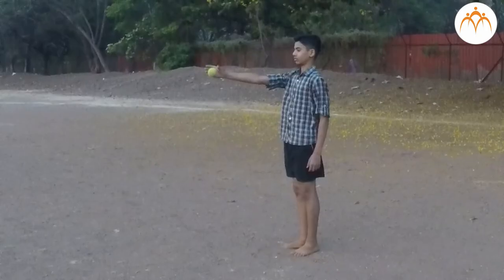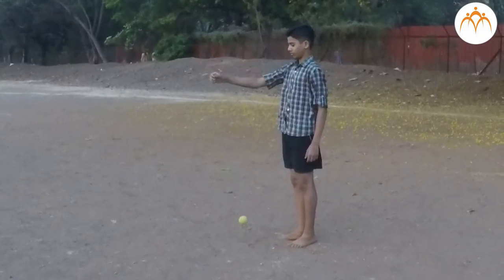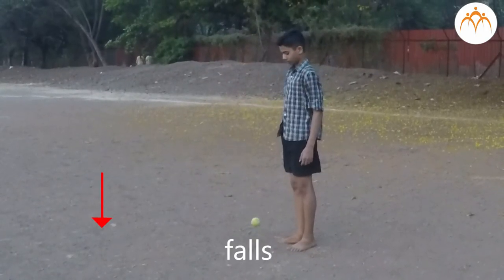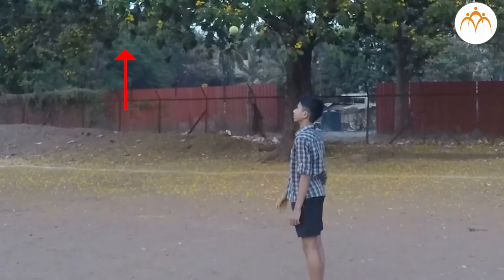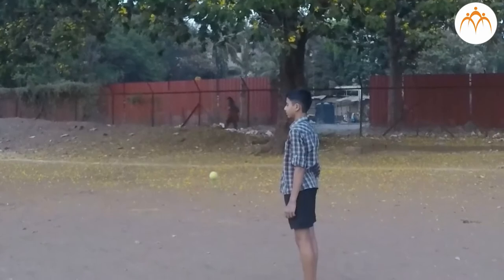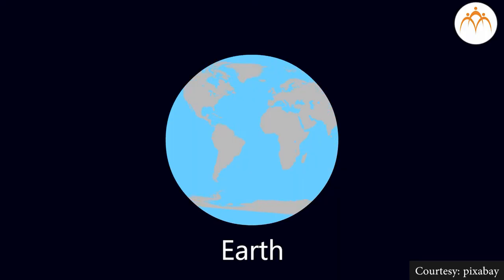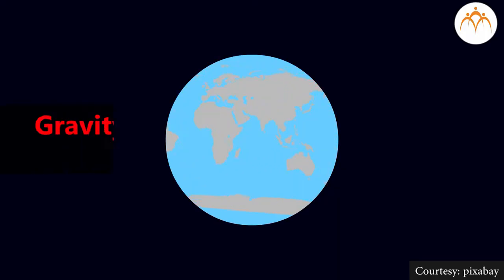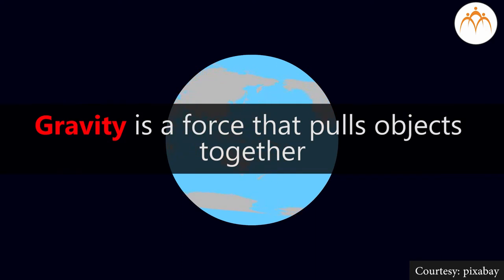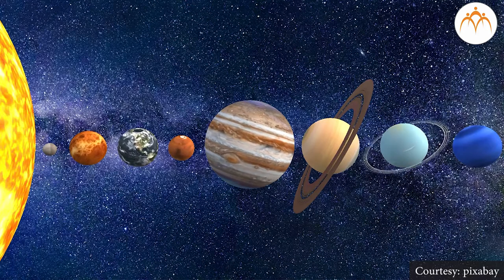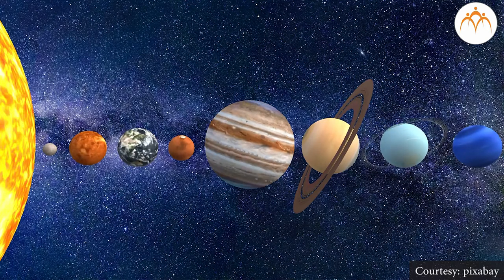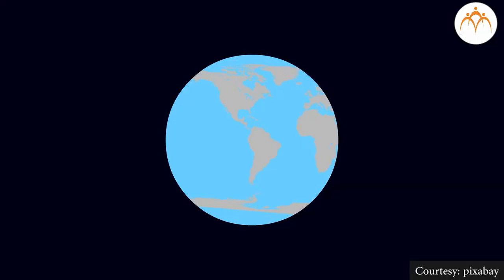Gravity. When you drop a ball, it falls to the ground. When you throw a ball up in the air, after some time, it falls on the ground too. Earth is responsible for this. Gravity is a force that pulls objects together. Gravity also holds the planets of the solar system in orbit around the Sun. Everything on Earth is affected by gravity.